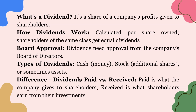What's a dividend? It's a share of a company's profits given to shareholders. How dividends work: calculated per share owned, and shareholders of the same class get equal dividends. Board approval: dividends need approval from the company's board of directors.